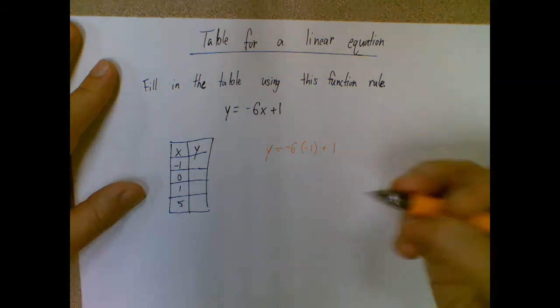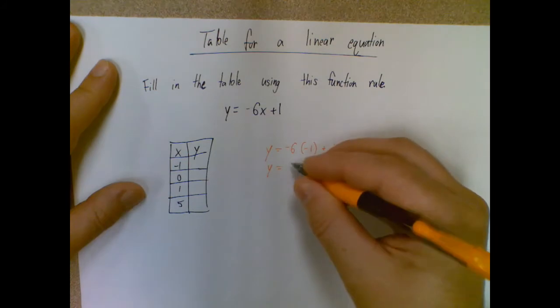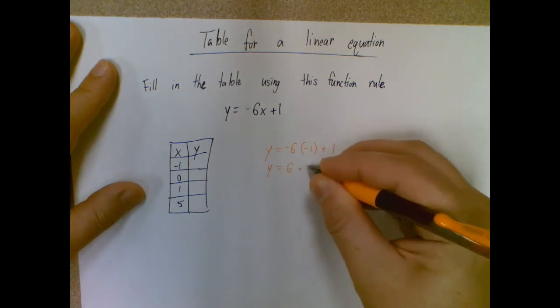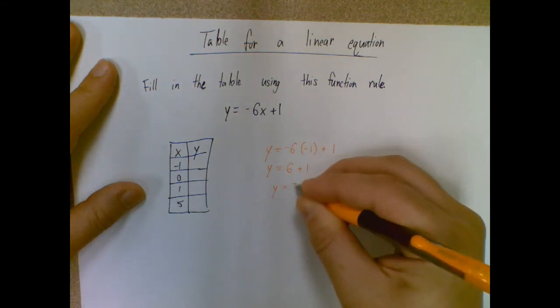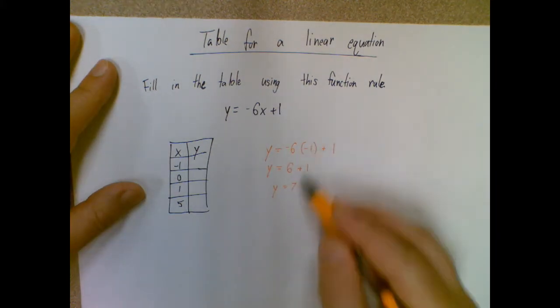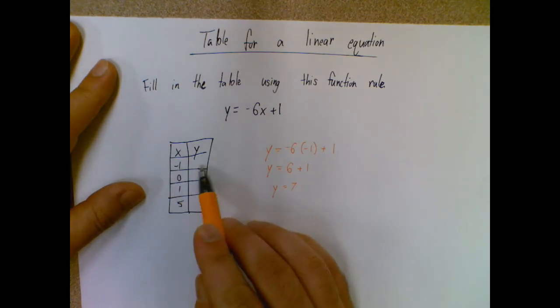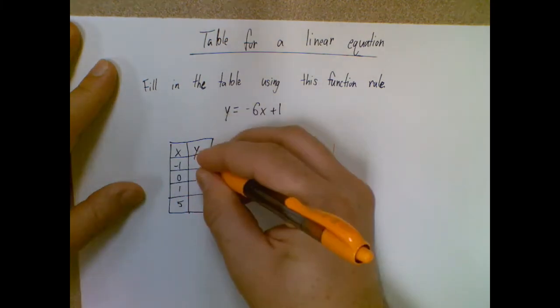After that, we just clean it up. So I want to do my multiplication first. So negative six times negative one is positive six, bring down the plus one. So in this case, y is seven. So since that was with negative one, the input's negative one, output is seven. So using my table here goes negative one to seven.